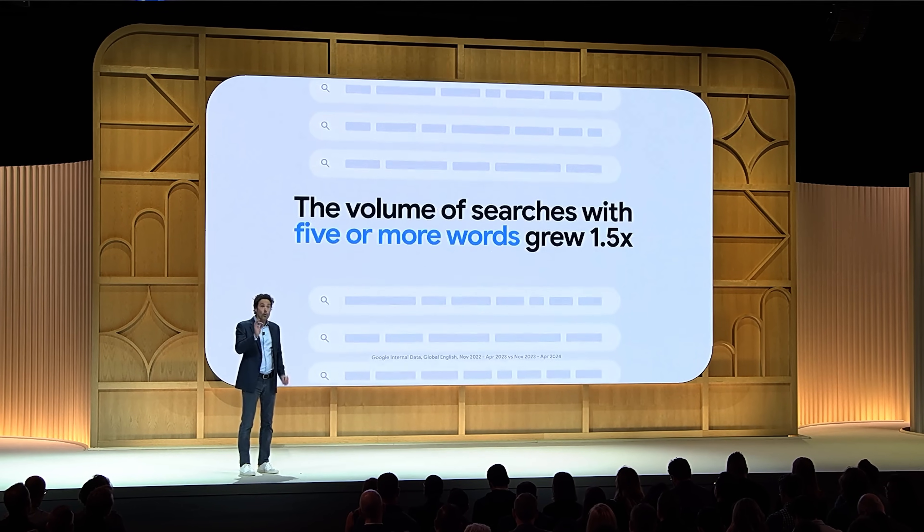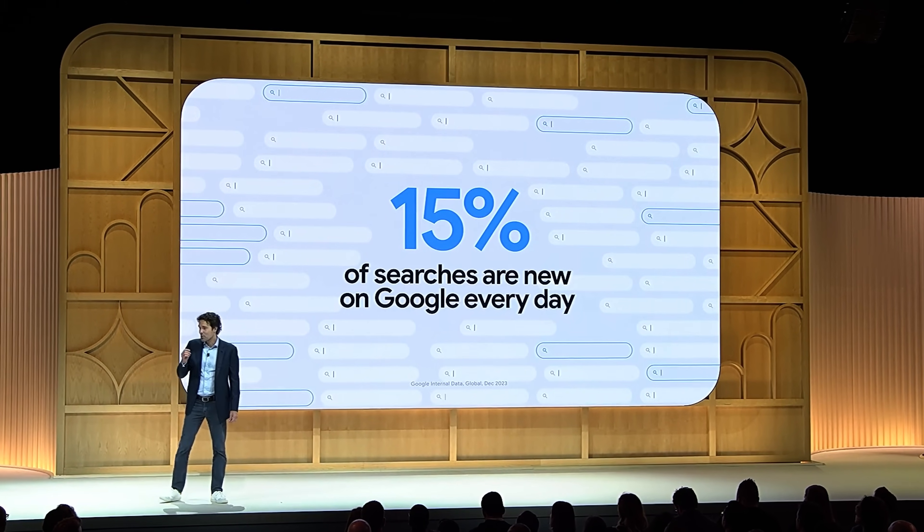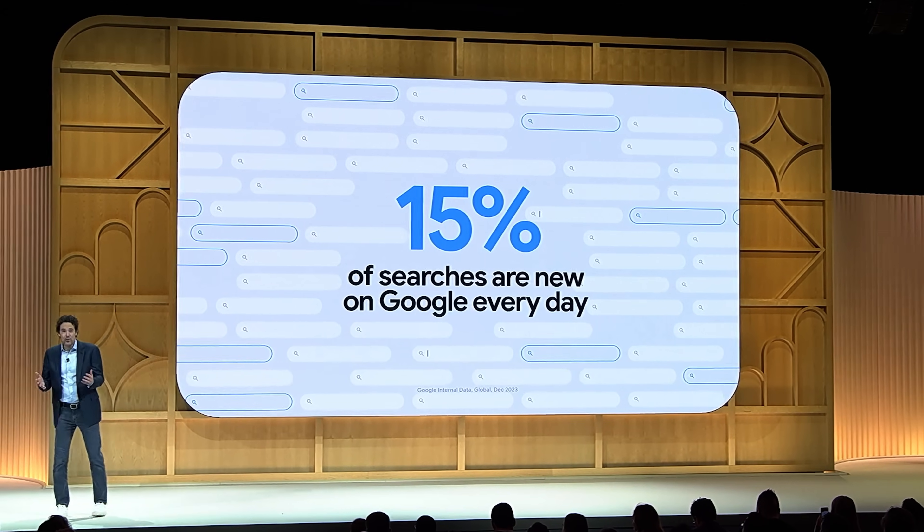Here are two core stats to keep in mind. Over the last 12 months, user queries with over five words or more in the search phrase are growing by 1.5 times — users are getting more specific with what they're searching, for example adding color and other details to a shoe search. Additionally, 15% of all Google searches on any given day are brand new — they've never been searched before. And that number will likely skyrocket as Google search moves toward a more conversational search experience. All of this brings us back to the way we used to do keyword research.